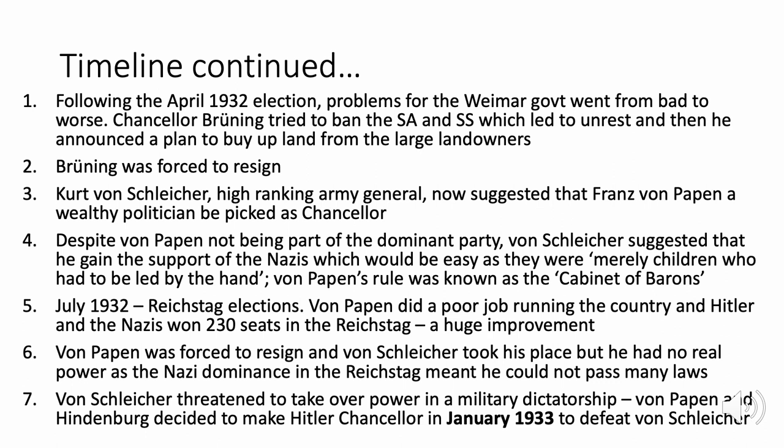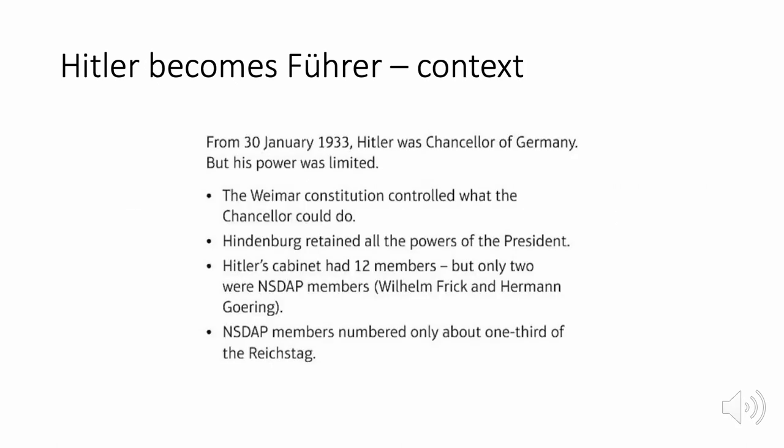Von Papen did a poor job and in the Reichstag elections of July 1932, Hitler won 230 seats — over 100 more than the 107 he held in September 1930. Von Papen was forced to resign. Von Schleicher took his place but lacked real power, threatening a military dictatorship. Von Papen and Hindenburg then decided to make Hitler chancellor in January 1933, worried about von Schleicher's military coup, with von Papen as vice chancellor — believing they could still control Hitler. They were very wrong.